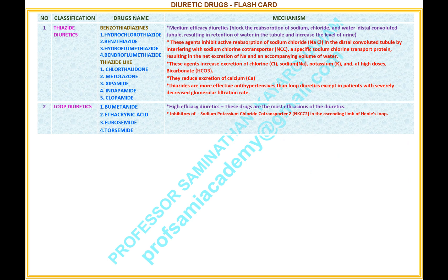Mechanism of loop diuretics. High efficacy diuretics. These drugs are the most efficacious of the diuretics. They are inhibitors of the sodium-potassium-chloride co-transporter 2 (NKCC2) in the ascending limb of Henle's loop.